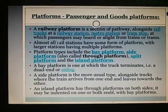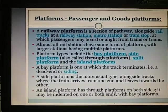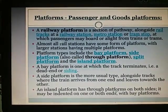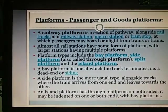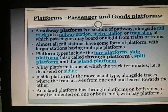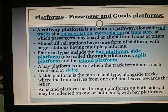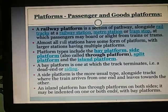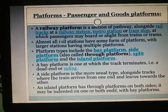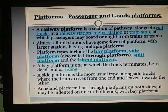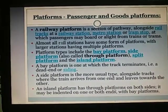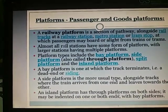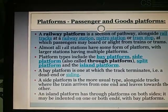Platforms — passenger and goods platforms: A platform is a section of the pathway alongside a rail track at a railway station, metro station, or tram stop at which passengers may board or alight from trains or trams. Almost all rail stations have some sort of platform, with larger stations having multiple platforms. Platform types include bay platform, side platform, split platform, and island platform. A bay platform is one at which the track terminates — that is, a dead end or siding.